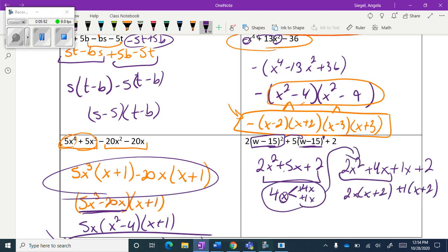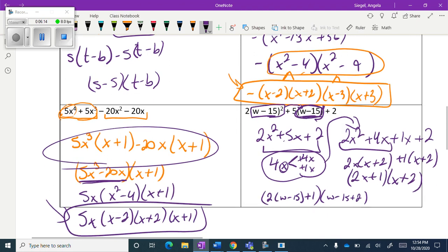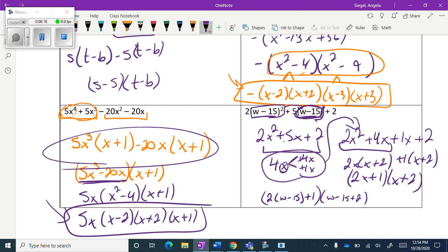This is how it's broken up, and we ended up with this. So I have 2x plus 1 times x plus 2, but remember our x is this. So I'm going to say 2 times w minus 15 plus 1, and then w minus 15 plus 2. We're going to clean that up a little bit, so we have 2w minus 30 plus 1, and then I'll go ahead and combine that: w minus 13.